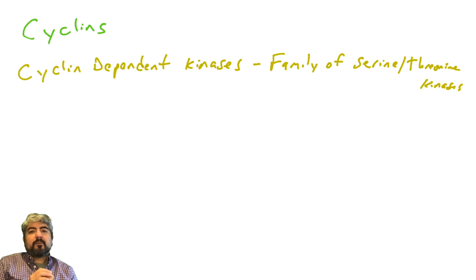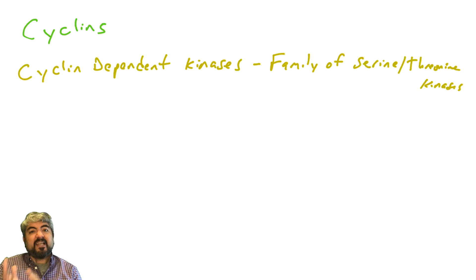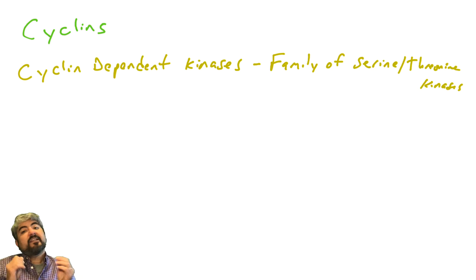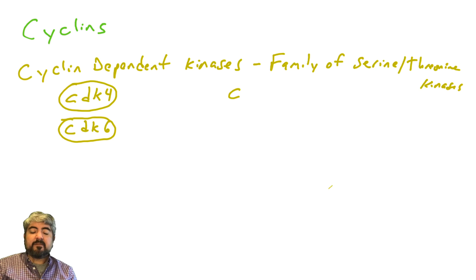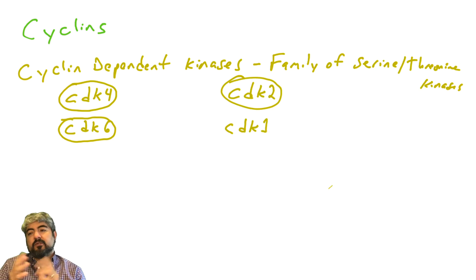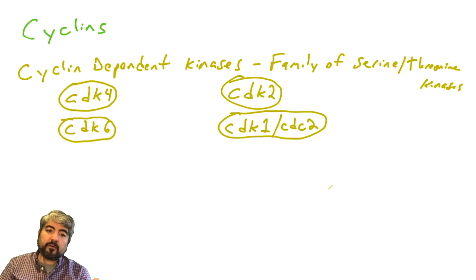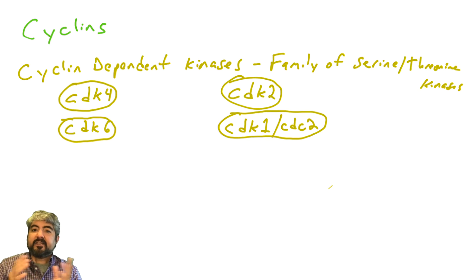Let's talk about these two families of proteins — cyclins and cyclin-dependent kinases — starting with the cyclin-dependent kinases. They are serine-threonine kinases, and there's a family of them. Humans encode a number of different CDKs: CDK4, CDK6, CDK2, CDK1.